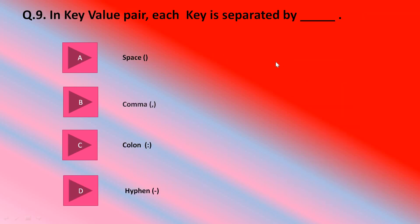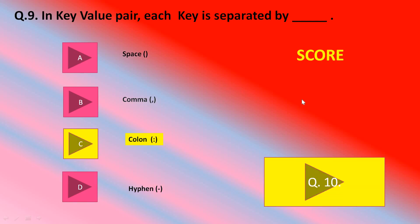Now let's move to question number 9. In key-value pair, each key is separated by a space, a comma, a colon, or a hyphen. Colon is the correct answer. C option was the correct one. We have done nine questions. Only three are left students. Keep noting your marks.